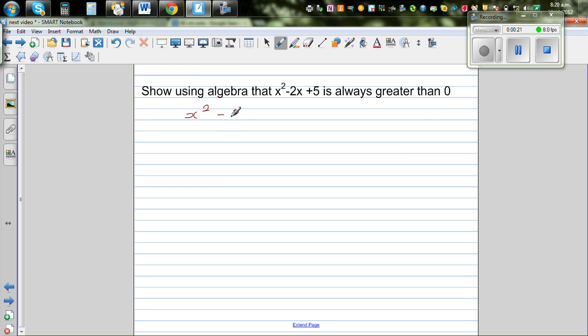So x squared minus 2x plus 5 I want to show is positive, is always greater than 0. This is what I want to show. Okay, so this is what I want to prove or show.